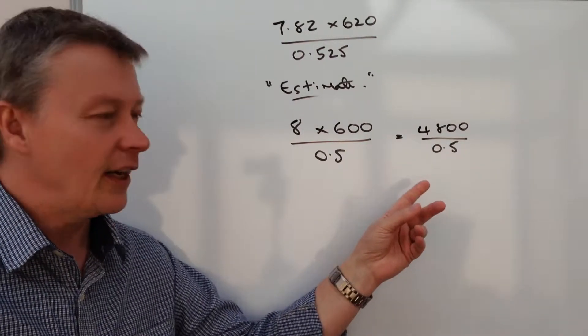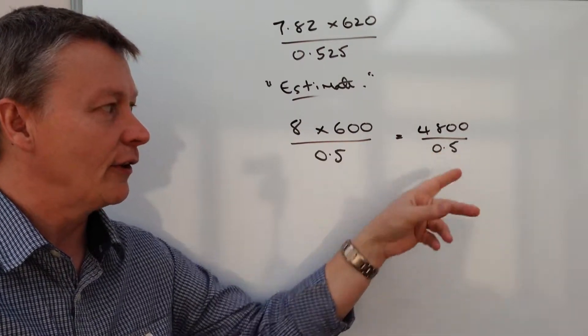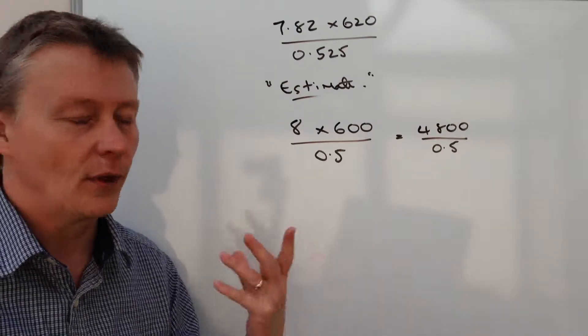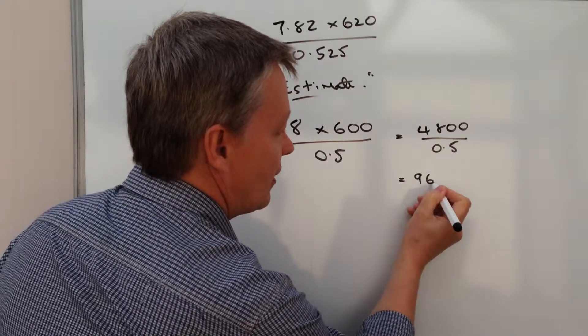Basically, what it's saying is how many halves are there in 4,800. Well, actually, there's 9,600.